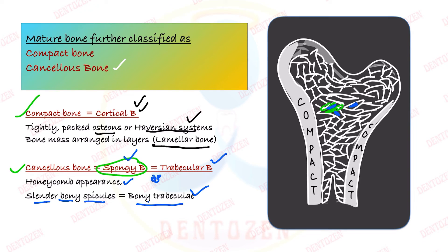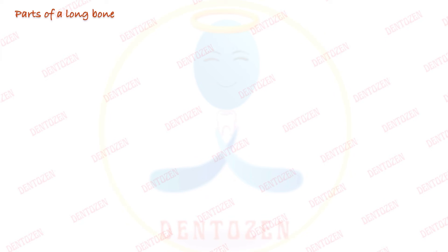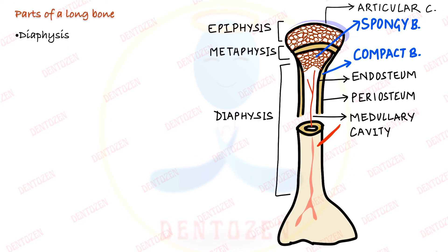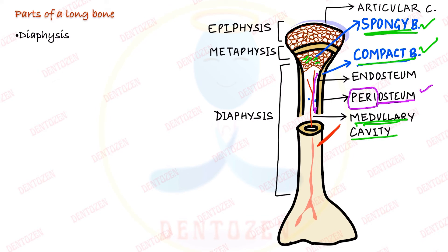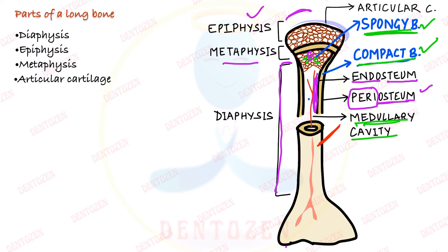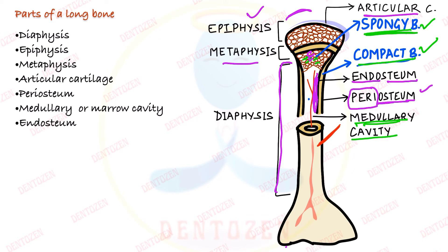Compact bone forms the outer covering of long bones. The inner part is the medullary or marrow cavity, which contains spongy bone — the interconnected trabeculae. There is an outermost layer of bone called the periosteum, and another layer on the inside of compact bone called the endosteum, which also surrounds the bony trabeculae. In long bones, the central shaft is called the diaphysis, the outer parts are the epiphysis, and in between is the metaphysis, with articular cartilage at the ends.